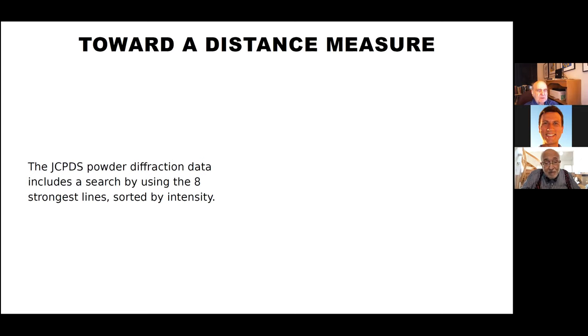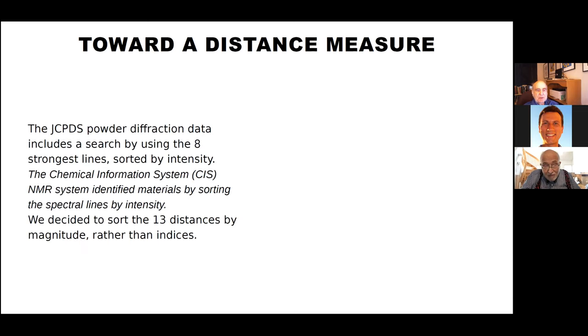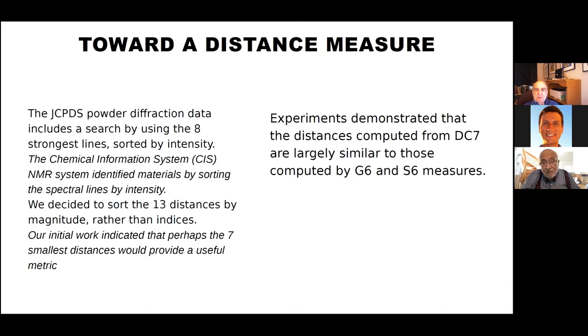So we thought about things we had done in the past. The International Centre for Diffraction Data maintains a database of hundreds of thousands of powder diffraction patterns. One of the methods of searching is they simply take the eight strongest reflections from a powder, sort them by intensity, and then search on those eight. In the Chemical Information System that we worked on years ago, the NMR system identified materials by picking out the spectral lines and then sorting by intensity. So we decided to sort the 13 distances by magnitude. Our initial work indicated that seven—the seven smallest of those—seemed to provide a useful metric.